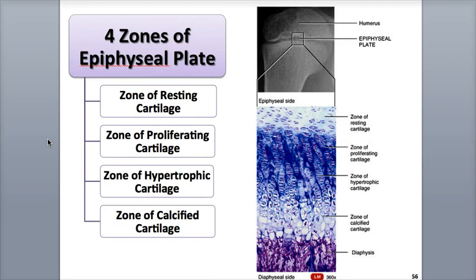The structure of the epiphyseal plate includes four zones. In order of their location from the epiphyseal side — closer to the epiphysis, the head of the long bone — towards the diaphysial side, closer to the diaphysis or shaft of the long bone, the zones are: the zone of resting cartilage, zone of proliferating cartilage, the zone of hypertrophic cartilage, and finally the zone of calcified cartilage. At the diaphysis we have true bone tissue.